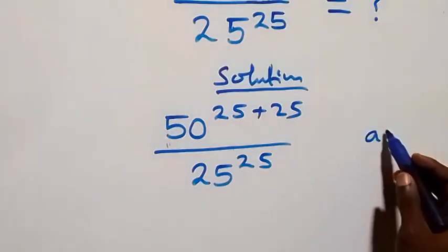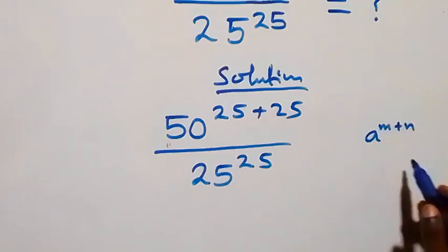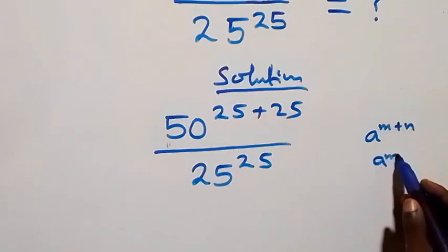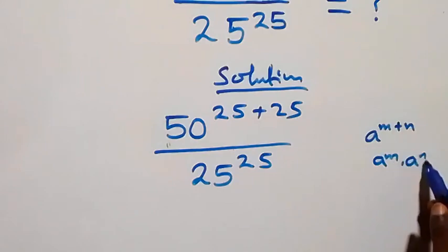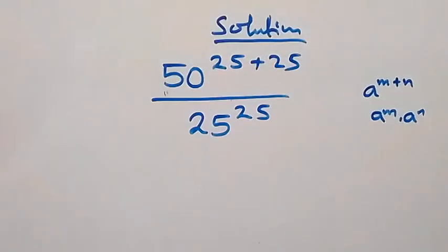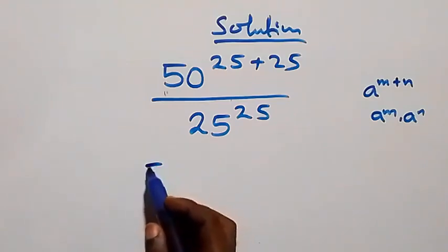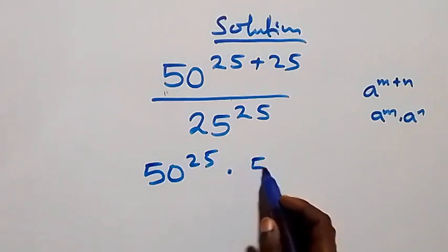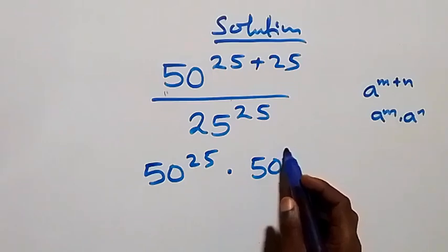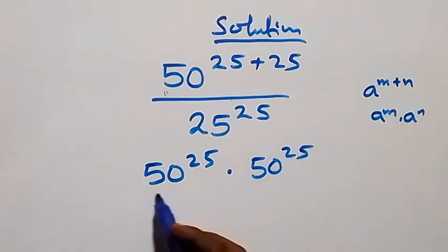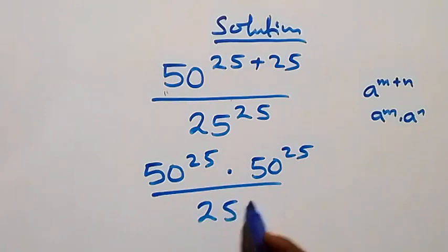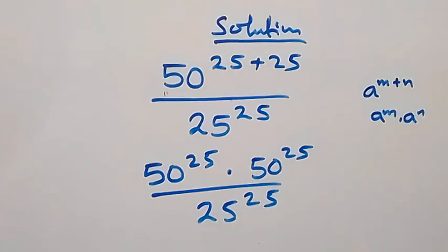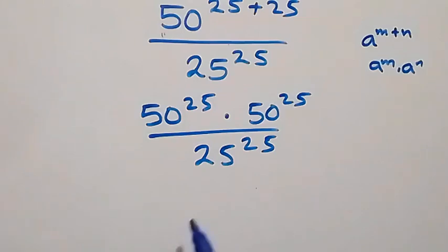From what we have here, when we apply the law of indices — a raised to power m plus n is the same thing as a raised to power m times a raised to power n — we have 50 raised to power 25 times 50 raised to power 25, then divided by 25 raised to power 25.